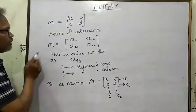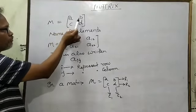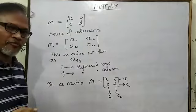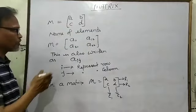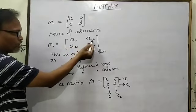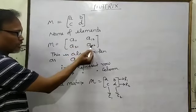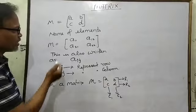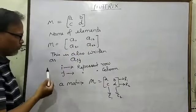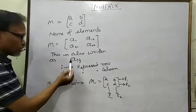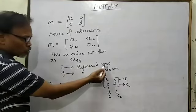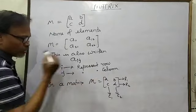If we write four elements in this form — a, b, c, d — then there are specific names for the elements. The first element is known as a11, second a12, third a21, then a22. This is also written as aij, where i represents the row and j represents the column.